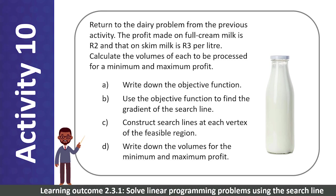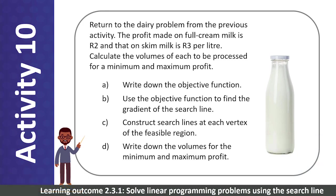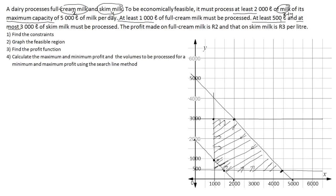Let's return to the dairy problem. Please work in the same groups as before and complete the problem using the search line method. For question 3 — find the profit function — the profit on full cream (x) is 2 rand per liter and on skim bulk (y) is 3 rand per liter. So the profit function is P equals 2x plus 3y.